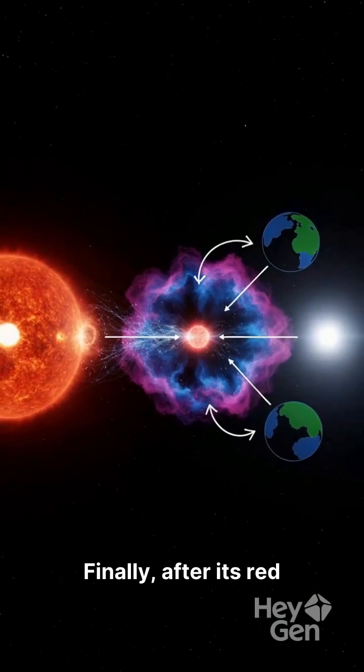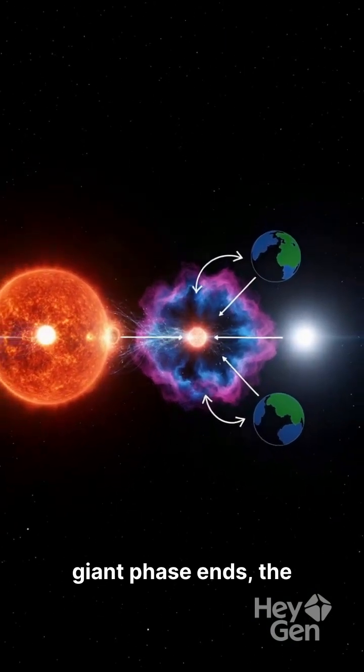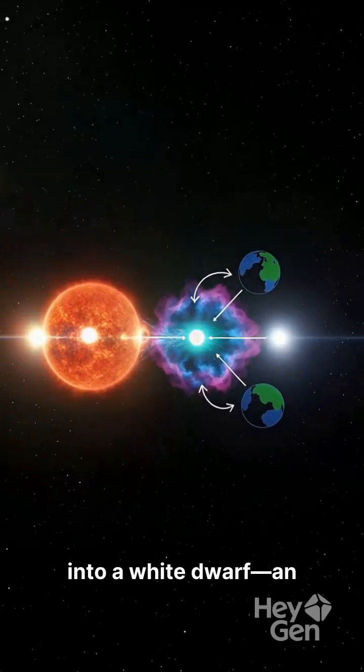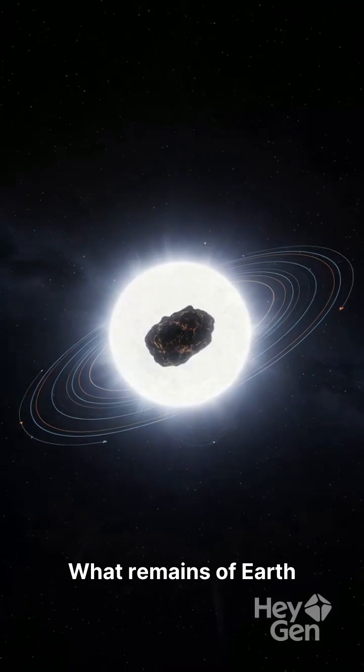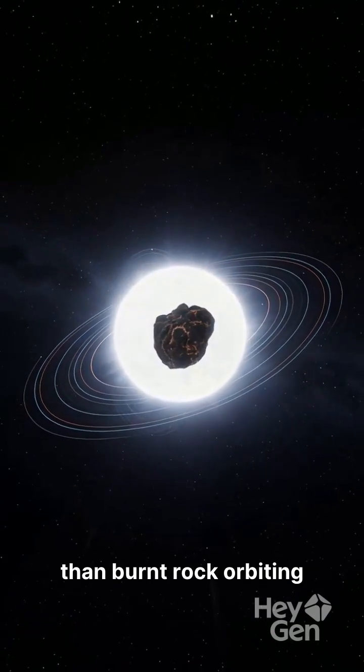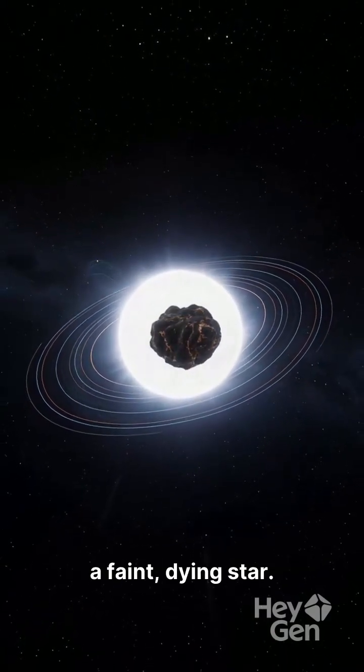Finally, after its red giant phase ends, the Sun will shed its outer layers and collapse into a white dwarf, an incredibly dense stellar remnant. What remains of Earth will be nothing more than burnt rock orbiting a faint, dying star.